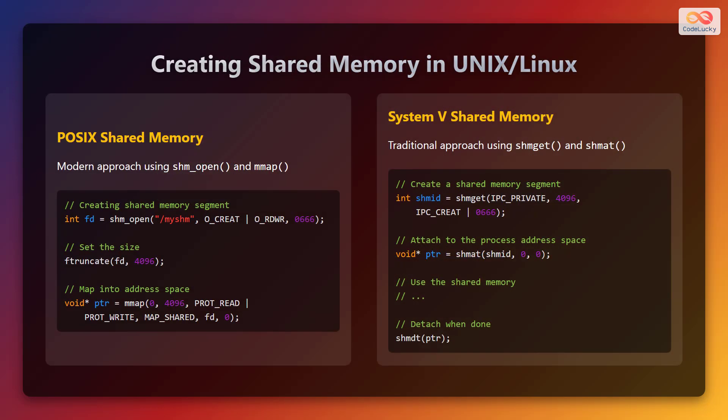Creating shared memory in Unix or Linux operating systems. There are generally two approaches to create shared memory regions in Unix and Linux systems. The first one is POSIX shared memory, which is a modern approach using the shm_open and mmap functions.